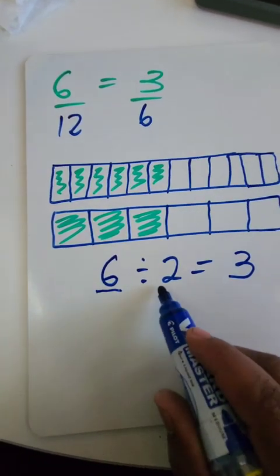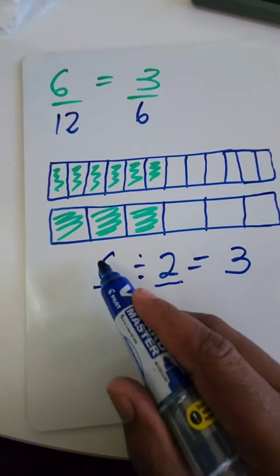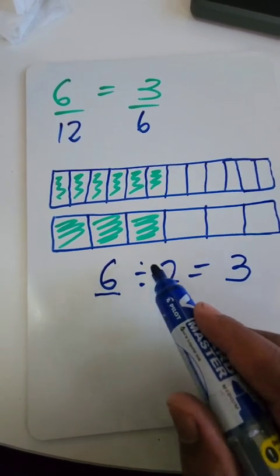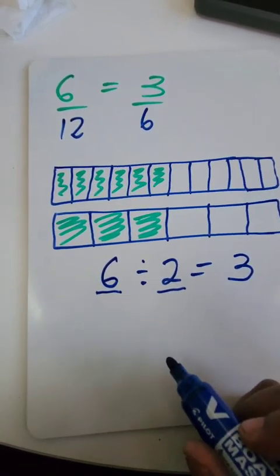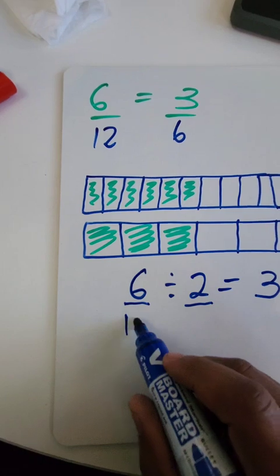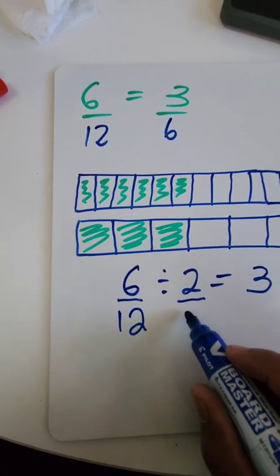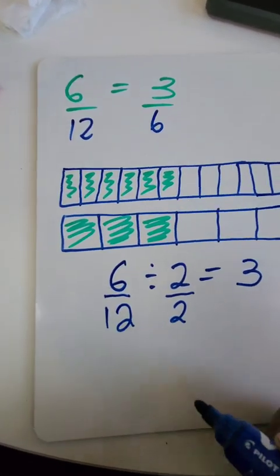Then, as we said, whatever we do on the top, we need to do on the bottom as well. So, at the bottom, we have a denominator, 12. We need to divide it by 2 as well.